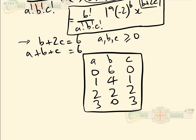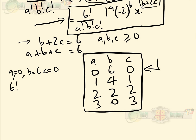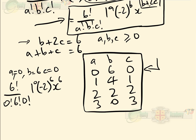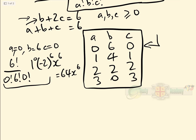For a equals 0, b equals 6, c equals 0: substituting into the general term gives 6 factorial over 0 factorial times 6 factorial times 0 factorial, times 1 to the power of 0, times (minus 2) to the power of 6, times x to the 6. All of this evaluates to 64, so the first term is 64x to the 6.